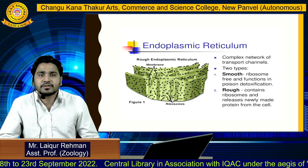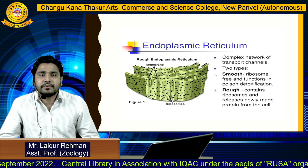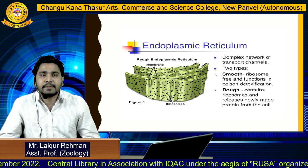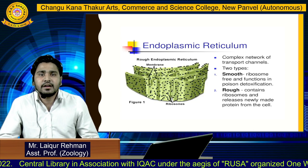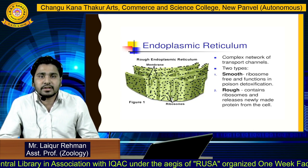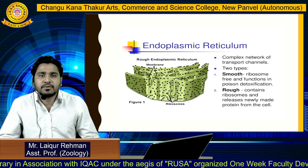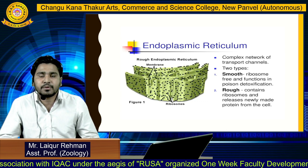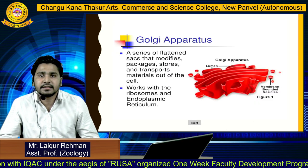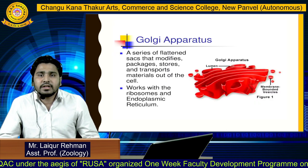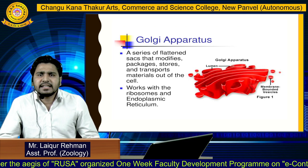The endoplasmic reticulum is a complex network of transport channels. There are two types: smooth and rough. In smooth ER, ribosomes are free and it functions in lipid synthesis and detoxification. In rough ER, ribosomes are attached and it releases newly made proteins from the cell.